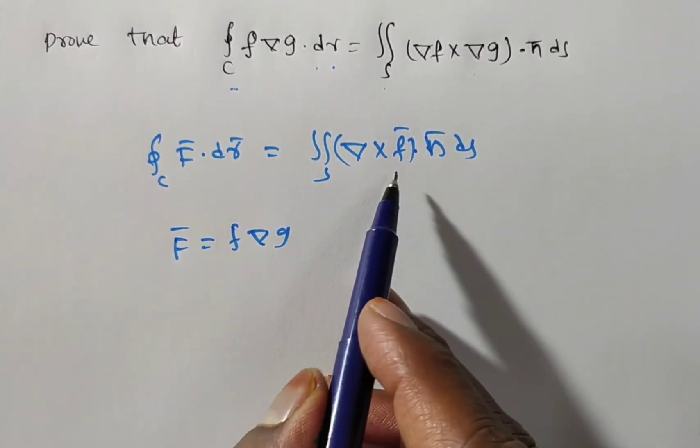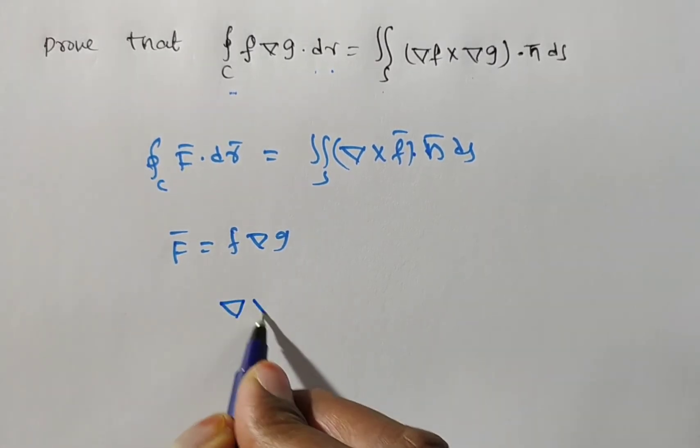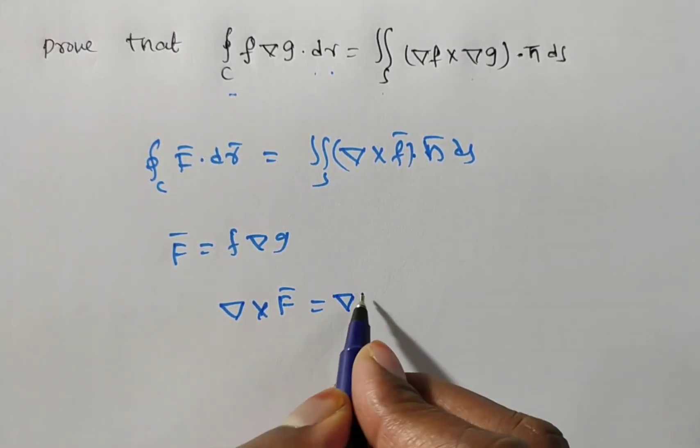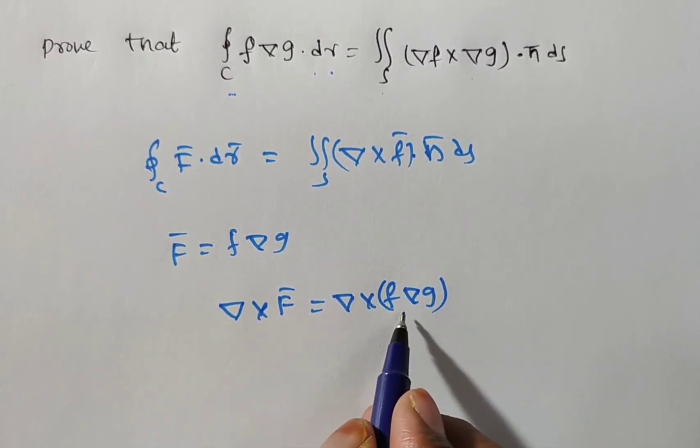What we required in the right side? Del cross f bar we need to find out. This value is del cross f bar or not here? So del cross f bar I am doing now. That is nothing but del cross f del g. You see del g is a vector.